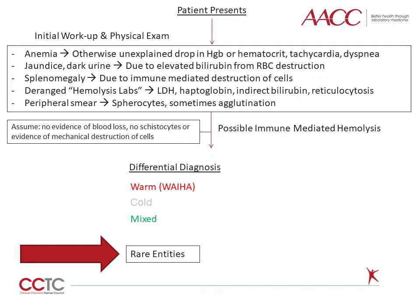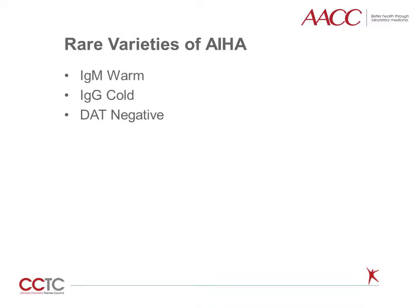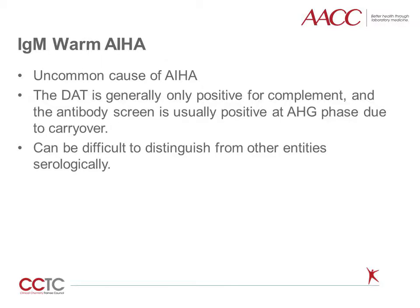We have now discussed the most common varieties of autoimmune hemolytic anemia. Let's briefly discuss the DAT pattern of reactivity for some less common diagnoses. Rarer varieties include IgM warm hemolysis, IgG cold hemolysis, and DAT-negative hemolysis. IgM warm hemolysis is rare. The DAT result in these cases would likely show reactivity only with complement reagents; the IgM antibody is probably present but just not detectable. Depending on the methodology used on the antibody screen, the result may be positive due to carryover.